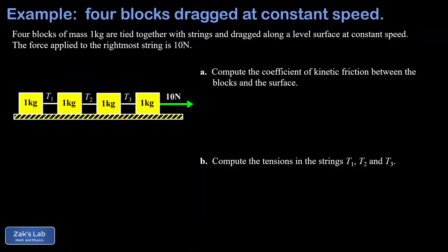In this video we're given four one-kilogram masses that are all tied together with strings. Those strings have unknown tensions that we're interested in solving for in part b. We're pulling on this system with a 10-newton force pointing to the right, but the entire system is moving with constant speed because all those blocks are experiencing a kinetic friction force opposing that force to the right. In part a we want to get the coefficient of kinetic friction.